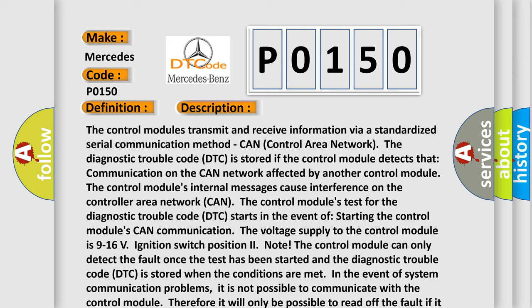The voltage supply to the control module is 9 to 16 volts, ignition switch position 2. Note: The control module can only detect the fault once the test has been started, and the diagnostic trouble code (DTC) is stored when the conditions are met. In the event of system communication problems, it is not possible to communicate with the control module; therefore, it will only be possible to read off the fault if it is intermittent.